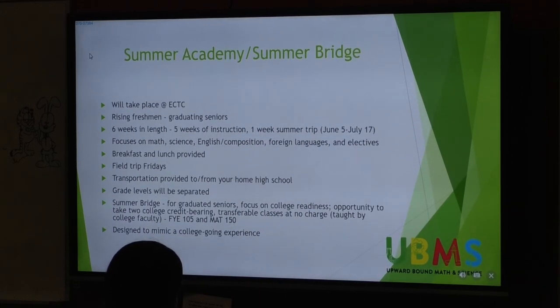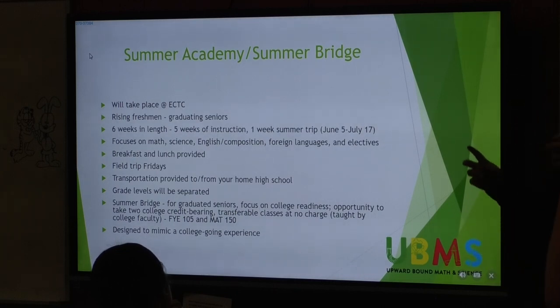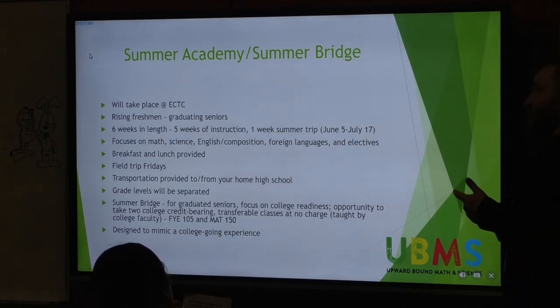Summer Academy and Summer Bridge. This is going to happen in the summer. It's going to take place at ECTC. It's for rising freshmen through graduating seniors, so everybody in this room would qualify to participate in it if you qualify for the program itself. And it's six weeks in length. We'll have five weeks of what we call instruction and a one-week summer trip. It'll run from June 5th through July 17th. We won't have any instruction or anything on the 4th because that's a national holiday. But we're going to place a focus on math, science, English and composition, foreign languages, and electives.